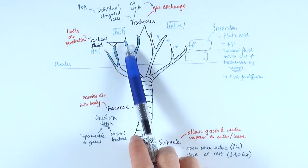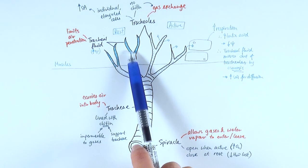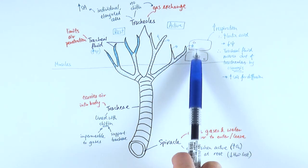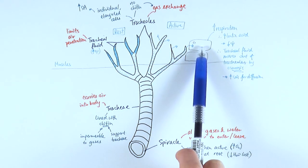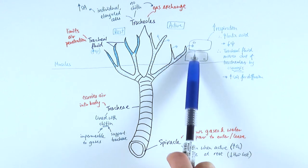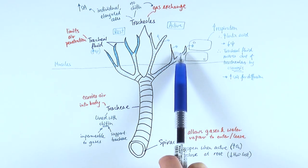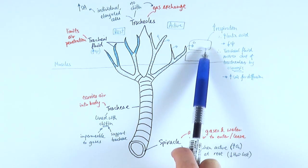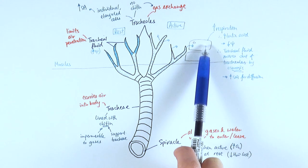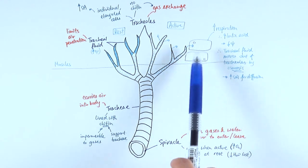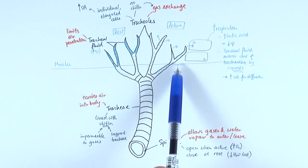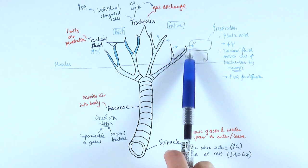Now if it's at rest and they've got tracheal fluid there, which limits the air penetration. But when it's active because of lactic acid being produced by the muscle cells, which decreases the water potential in these muscle cells, the tracheal fluid actually will move out of the tracheoles into the surrounding area, into the surrounding cells, which means that the tracheoles now have more surface area to do efficient gas exchange.